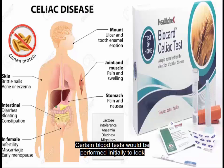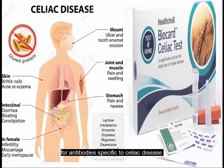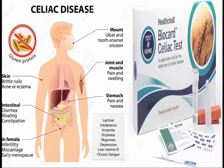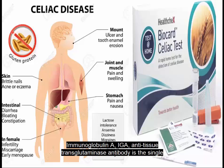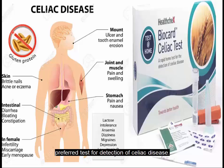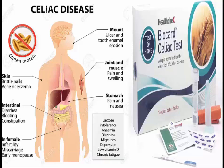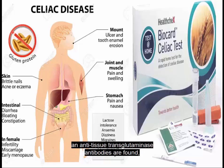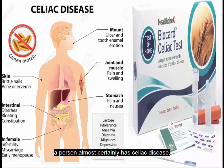Certain blood tests are performed initially to look for antibodies specific to celiac disease. Immunoglobulin A anti-tissue transglutaminase antibody is the single preferred test for detection of celiac disease. If abnormal elevated levels of IgA anti-tissue transglutaminase antibodies are found, a person almost certainly has celiac disease.